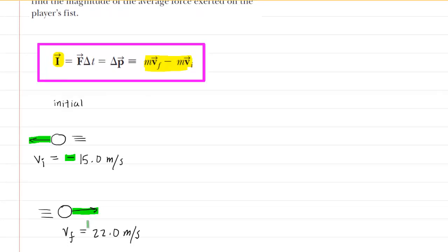Since it's pointing to the right in the opposite direction, the final velocity is going to be positive 22 meters per second. It's very important to get those signs correct when calculating the impulse.